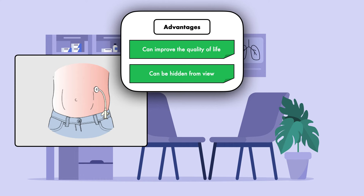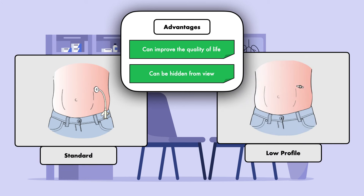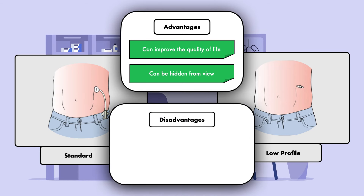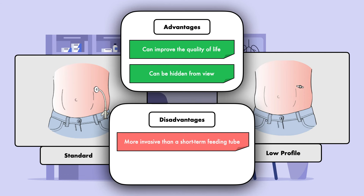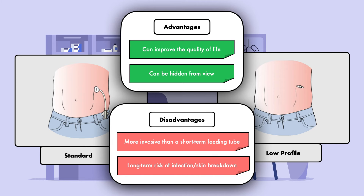This is particularly true with a low-profile tube. Nevertheless, long-term feeding tubes do have some disadvantages. For one, the placement of a long-term feeding tube is more invasive than a short-term feeding tube since the abdominal wall must be penetrated. For this reason, there is a higher risk of complications during placement, related to both the actual procedure and any sedation that is used. A long-term feeding tube also carries a long-term risk for infection and or skin breakdown at the insertion site, which can occur from poor hygiene, leakage of gastric contents, pulling on the tube, or an improper fit.